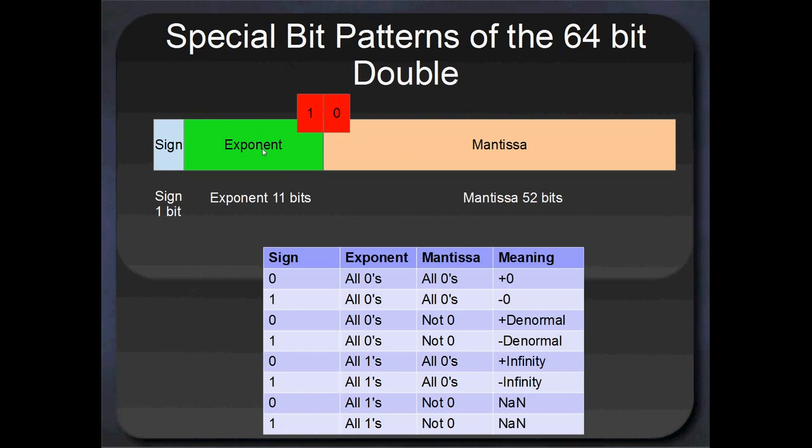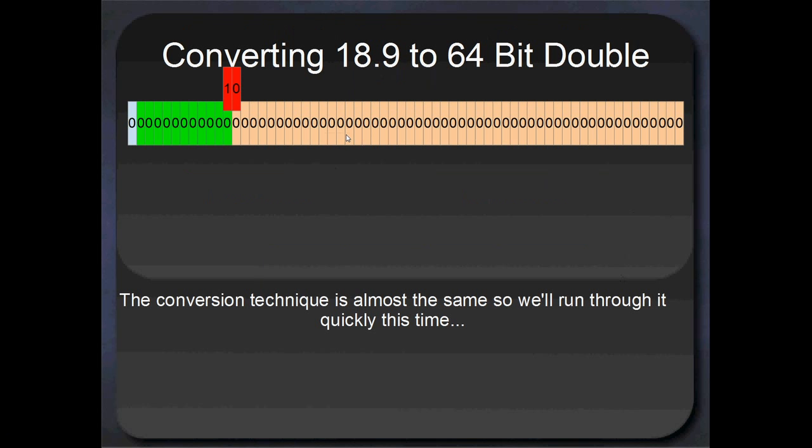In a similar way to the singles, exponent fields of all zeros and all ones mean special things. So to represent positive zero, or just zero, if your whole bit pattern is nothing but 64 zeros, then that's what you've got, positive zero. If the sign is a 1, then you've got negative zero. Or you can have some bit in your mantissa, and the rest of the values are zero, that's going to be positive denormal. Or you can have negative denormal by flipping the sign bit. There's also positive and negative infinity, and there's NaN, or not a number, is available as well. Let's move on to converting a decimal number to its 64-bit double bit pattern.